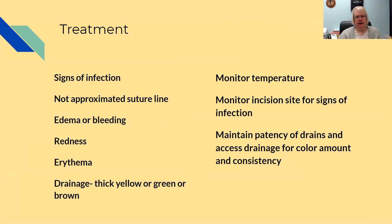Treatment: monitor their temperature, monitor the incision for signs of infection, maintain patency of drains, and assess drainage for color, amount, and consistency. Signs of infection include a wound that is not approximated at the suture line, edema or bleeding, redness, erythema, and drainage that is thick and yellow, green, or brown depending on the infectious content — and more likely than not, it will have a foul smell.